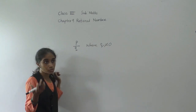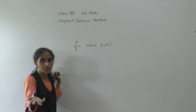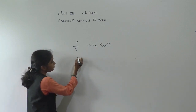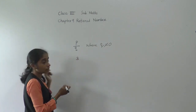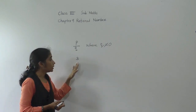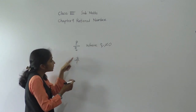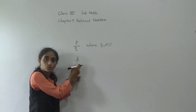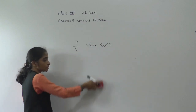You will ask: madam, you told us about natural numbers — so how is a natural number like 3 a rational number? See, 3 means the denominator is 1, so it is written in the form of P upon Q where Q is not equal to 0. So this number is a rational number.